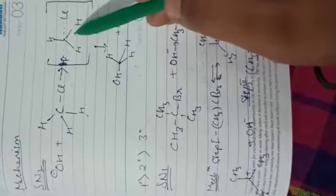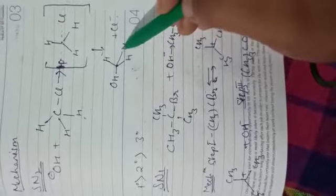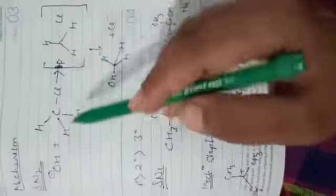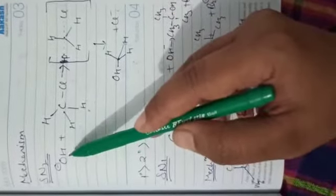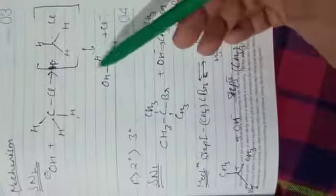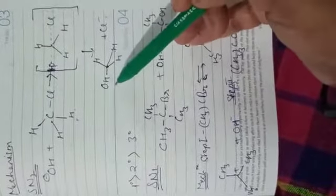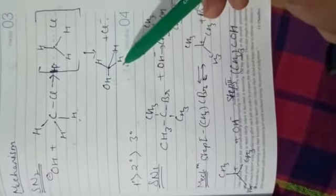As the reaction proceeds, the configuration of the carbon atom under attack inverts, in much the same way as an umbrella is turned inside out when caught in a strong wind. This is what we call inversion of configuration. The hydroxide attacks from the opposite side of the halogen atom, which causes the whole configuration to invert.